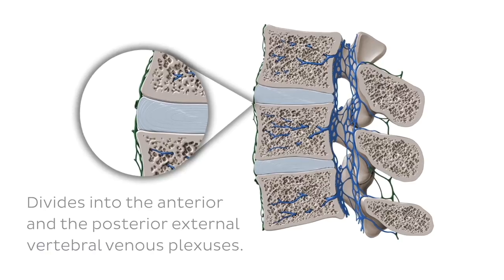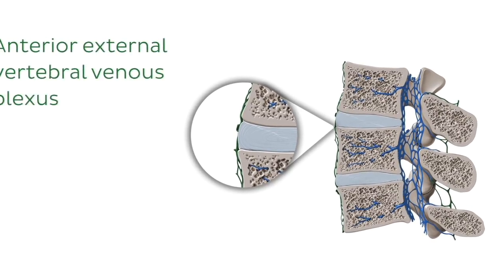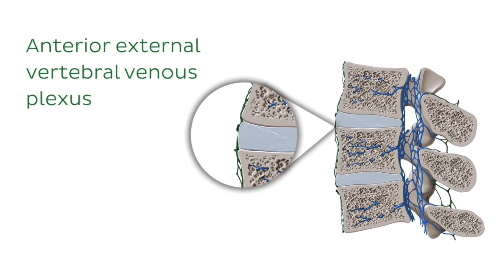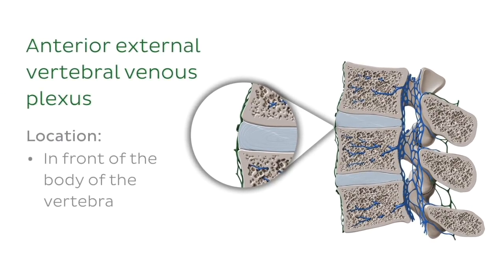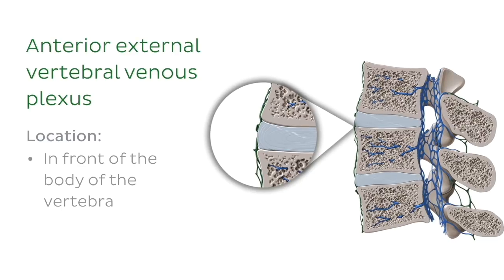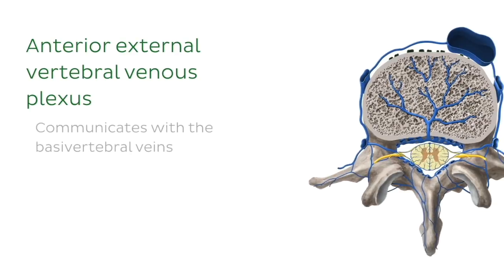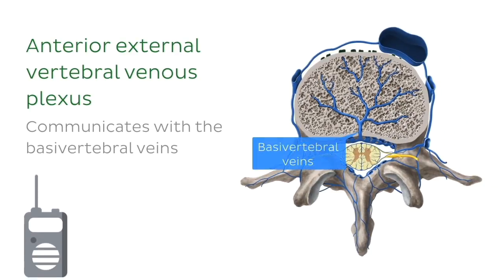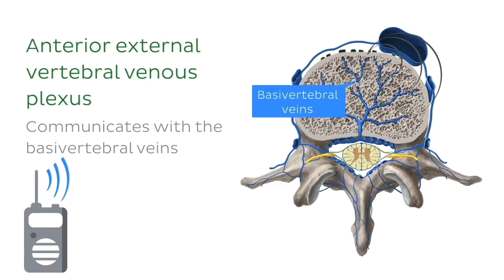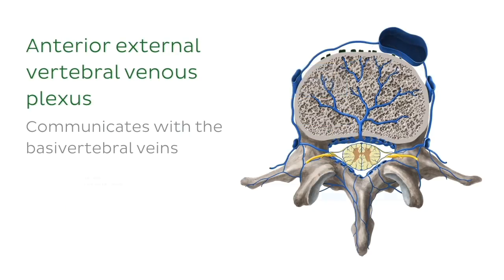The anterior external vertebral venous plexus lies along the front of the body of the vertebra. It communicates with the basivertebral veins seen here within the vertebral body, and with the intervertebral veins.